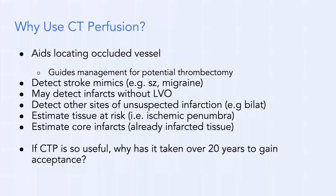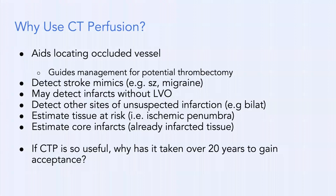Why use CT perfusion? It can aid in locating the occluded vessel and guide management for potential thrombectomy. We can detect stroke mimics such as seizure and migraine, detect infarcts without a large vessel occlusion, detect other sites of unsuspected infarction — such as bilateral infarcts we saw during the peak of COVID — estimate tissue at risk (the ischemic penumbra), and estimate the core infarct (already infarcted tissue).